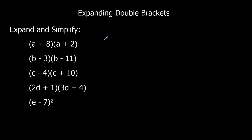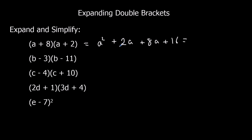The first one: when we expand, a times a is a squared, a times 2 is 2a, 8 times a is 8a, and 8 times 2 is 16. Then simplifying: 2a plus 8a gives us 10a. So the final answer is a squared plus 10a plus 16.